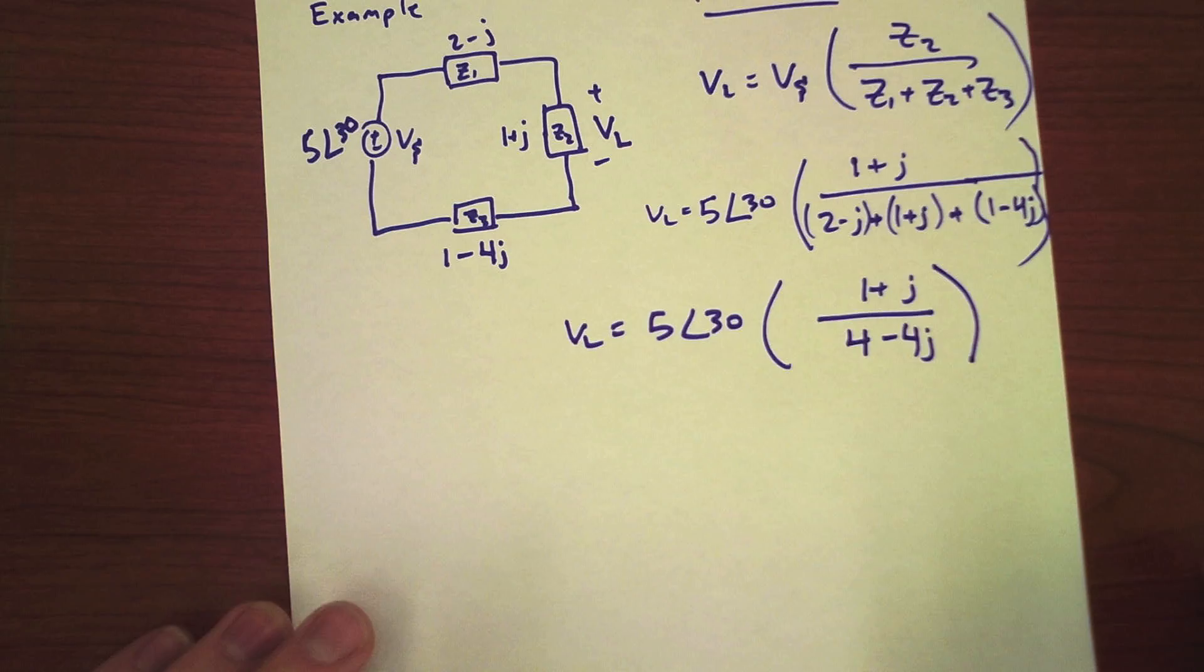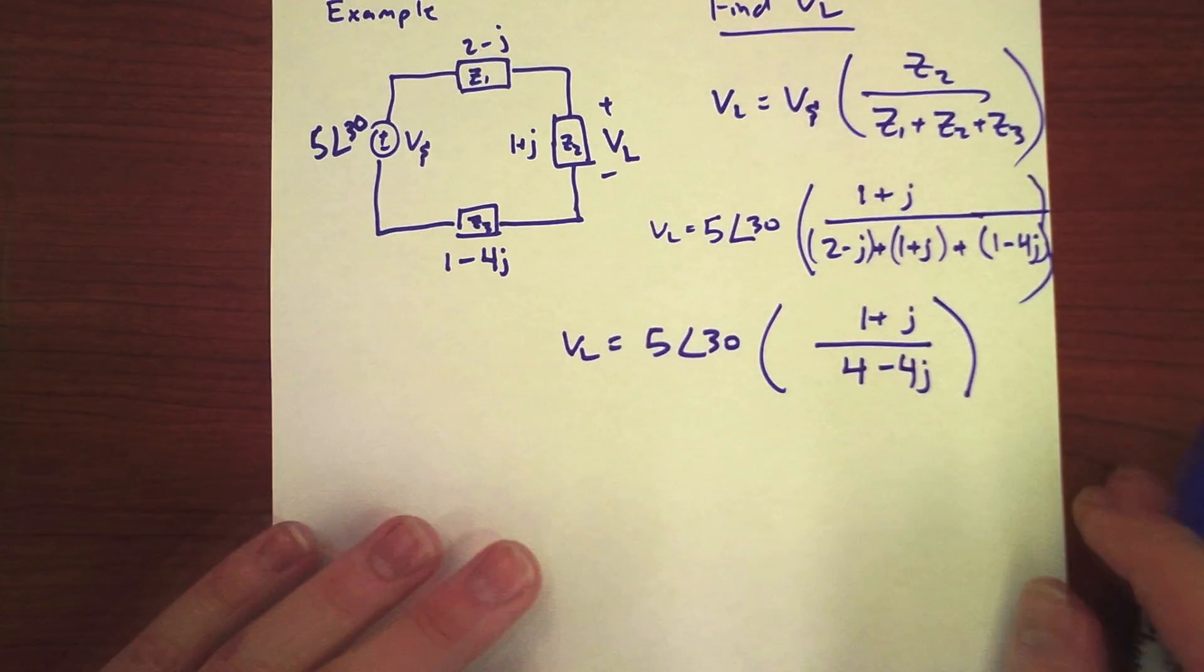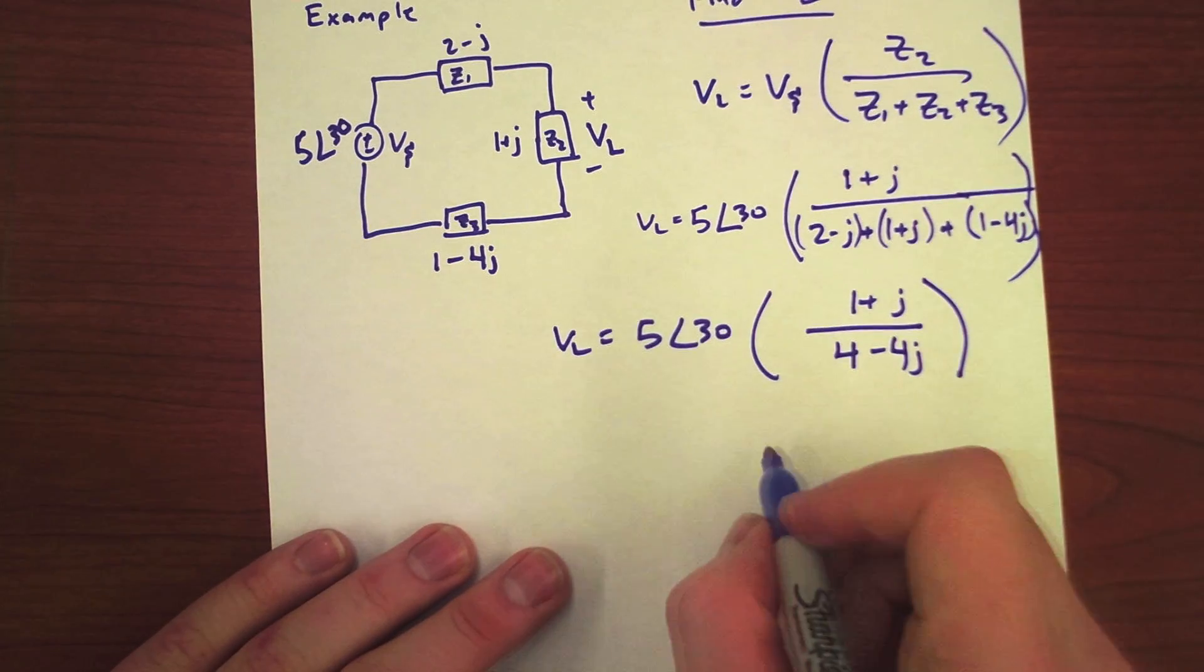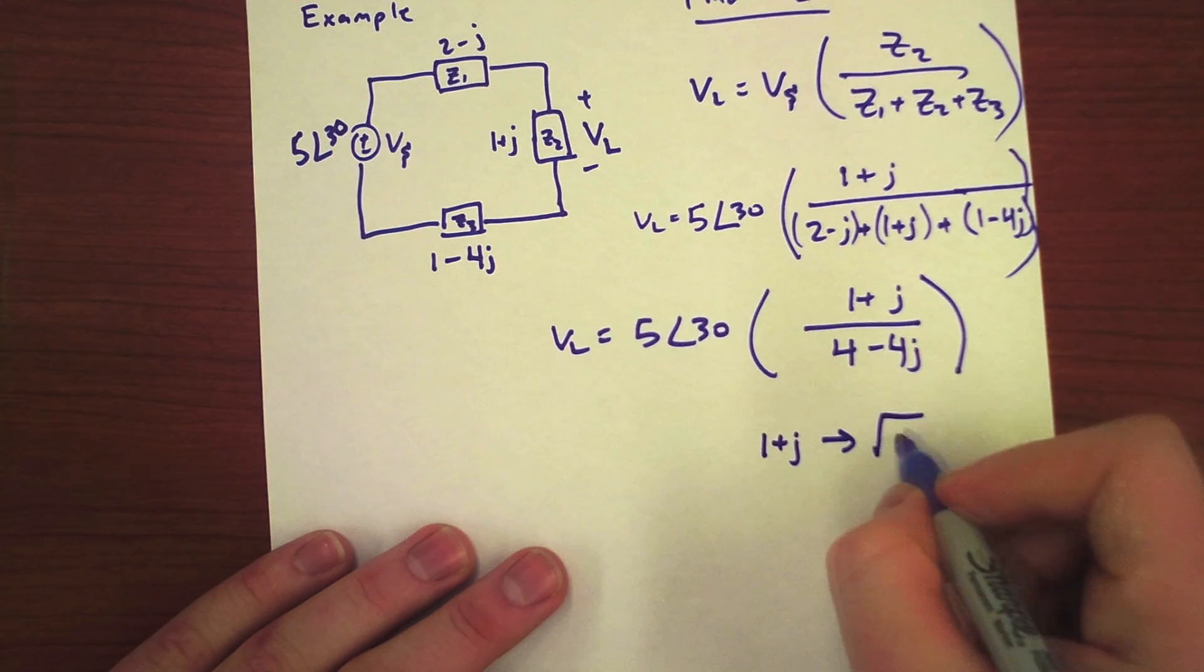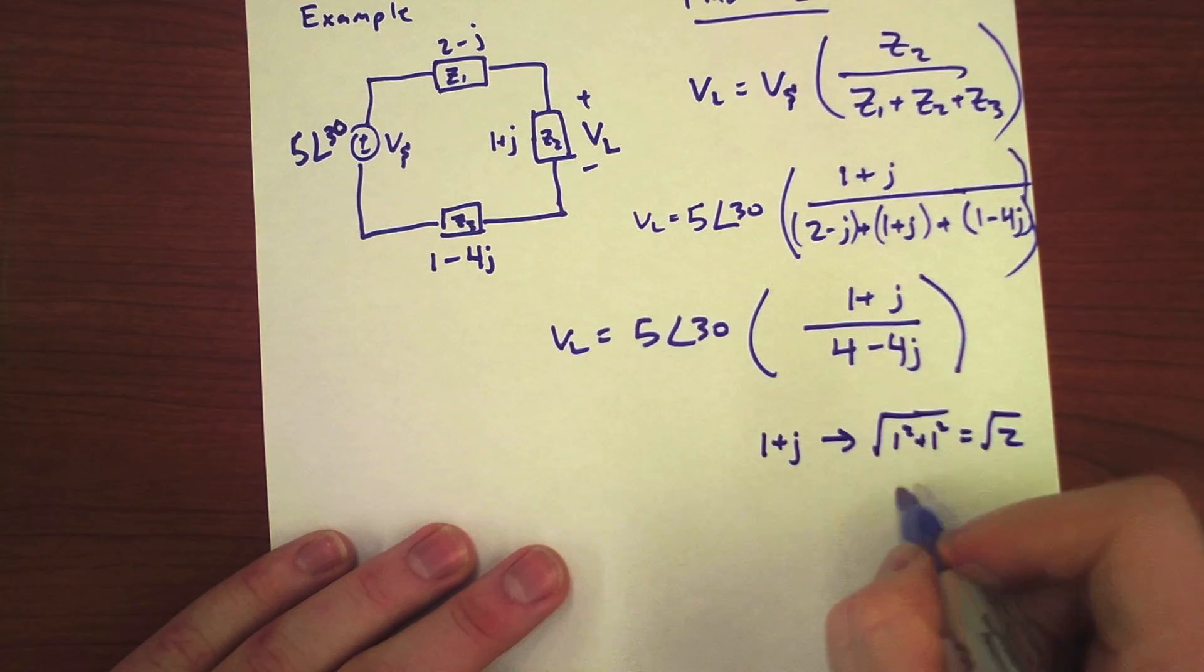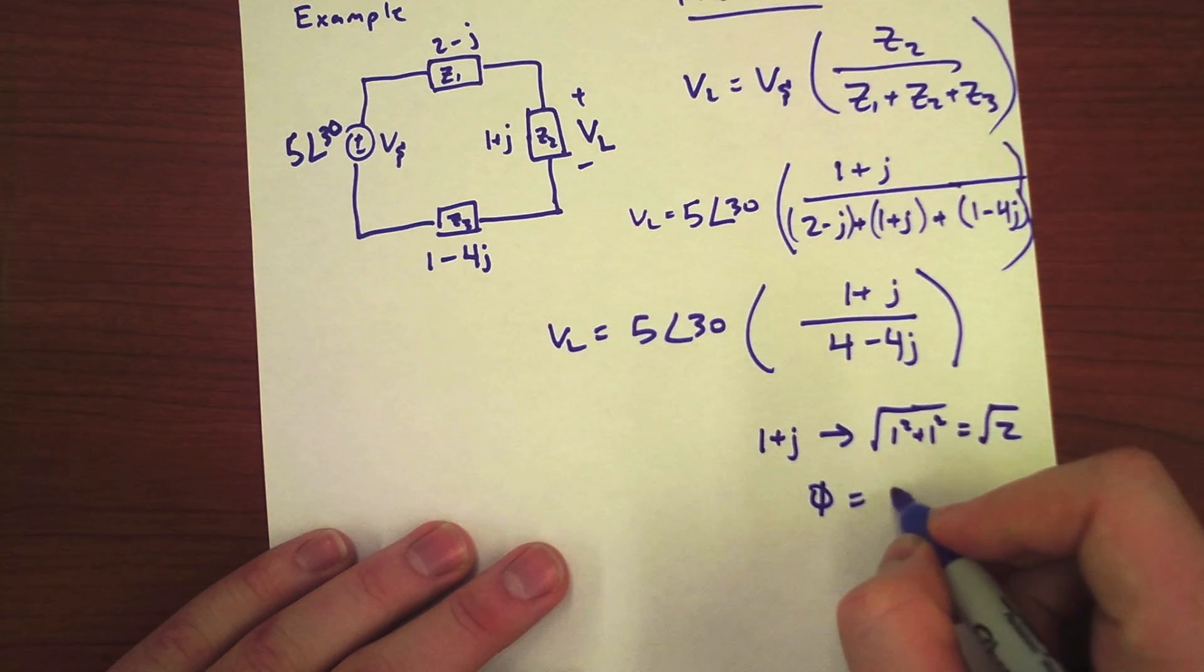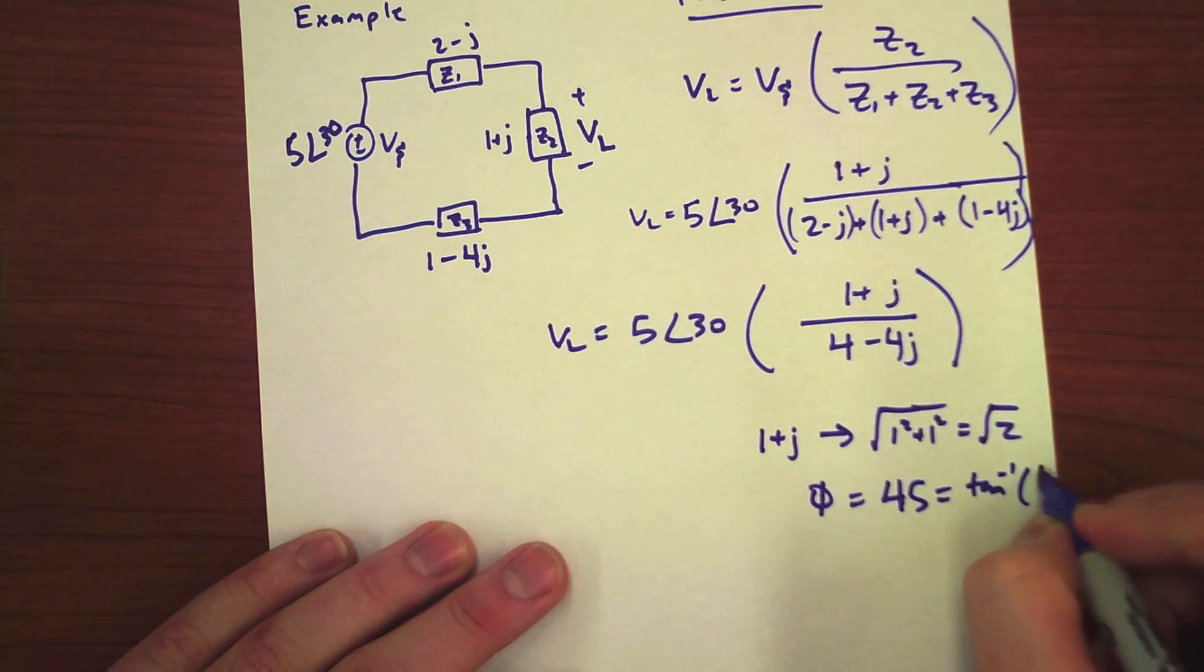And now, here's where we want to start converting because we're going to be dividing complex numbers. So, let's do our top. 1 plus j is simply square root of 1 squared plus 1 squared is radical 2. Angle phi equals 45 degrees, which is just the tangent inverse of 1.